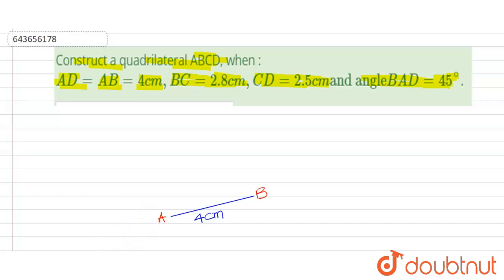So let us draw a line for angle BAD. Suppose this is a line, or we call it as angle. Name it as D. This will be equal to 45 degrees.